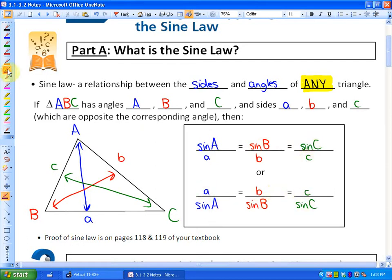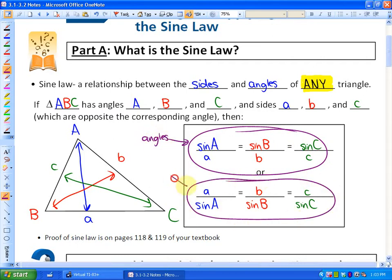One thing we looked at in that lesson was that we use this version, which is the angles in the numerators, when you're solving for angles, and we use this version, the second version, when we're solving for side lengths. That's because the angles are in the numerator in the first version and the side lengths are in the numerator in the second version. It's just easier solving for numerators.